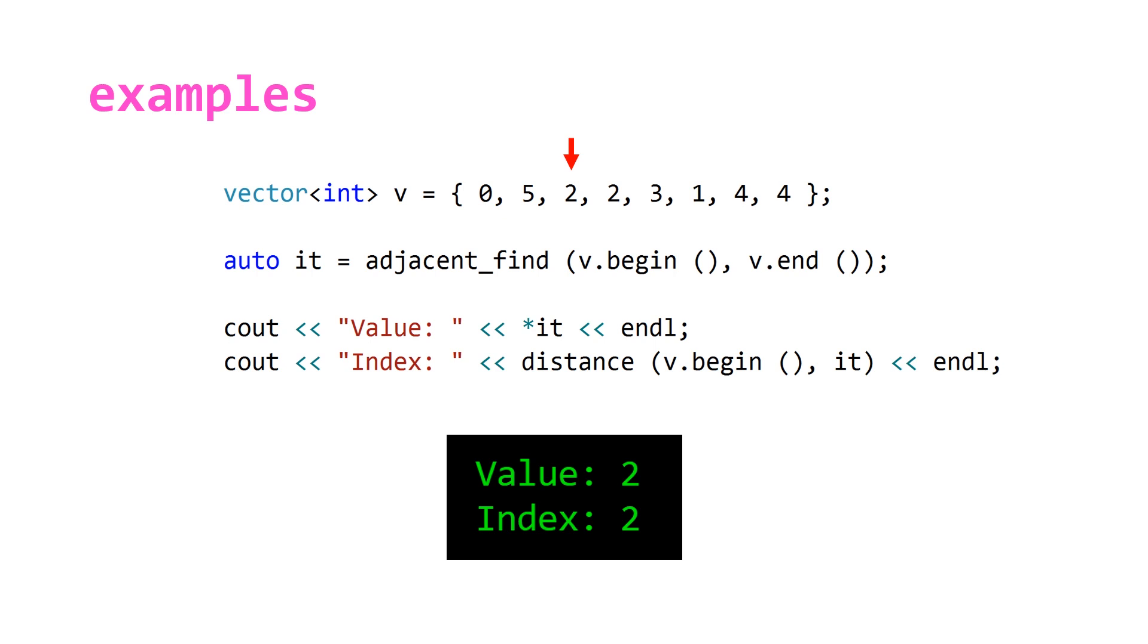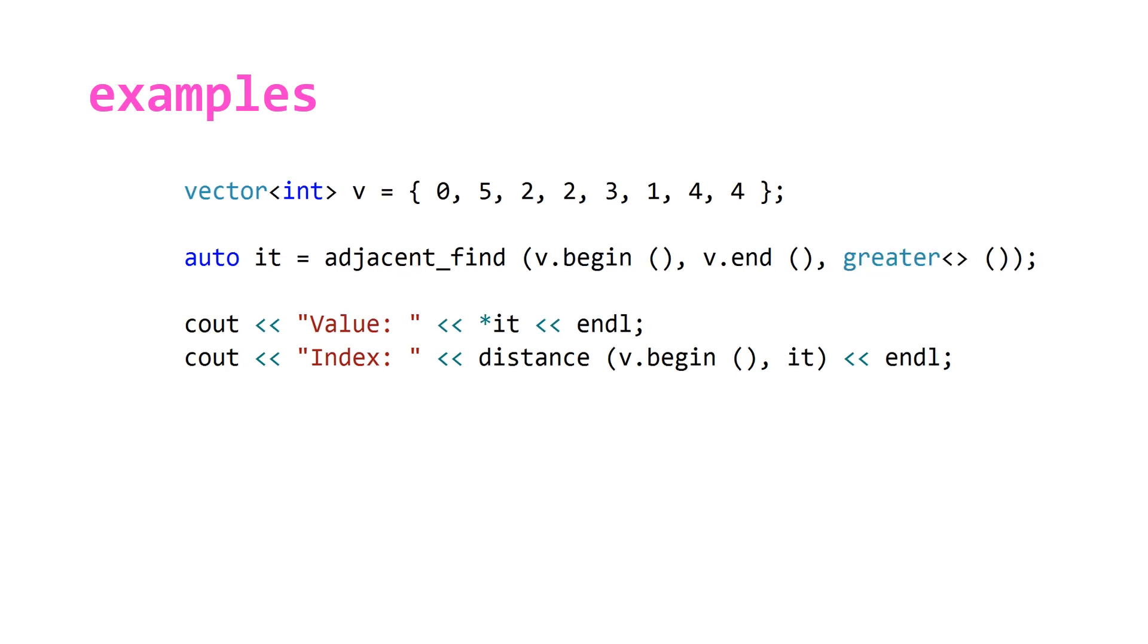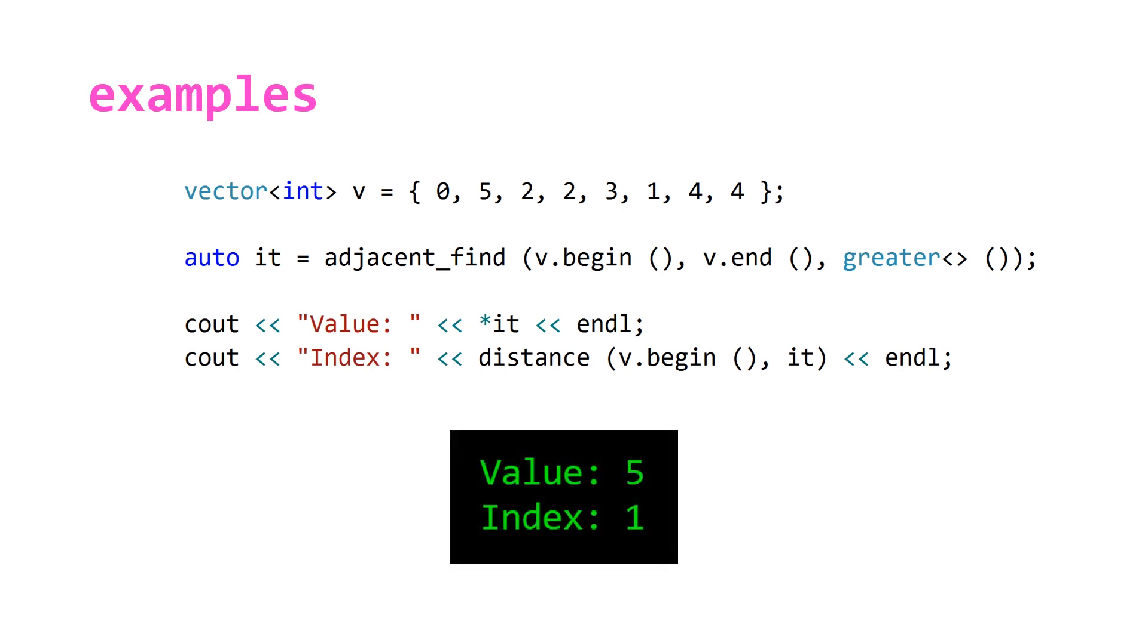So this by itself is not amazingly useful, but we can use the overloaded version that takes a binary predicate to do other things with this function. If we take a look at our next example, we can pass it the greater predicate that the STL also provides us with in the functional library, and this is going to return us an iterator to the first element that is greater than the element after it. So if we run this piece of code, it's going to return us a value of 5 and index 1, which is going to be an iterator pointing to this value.